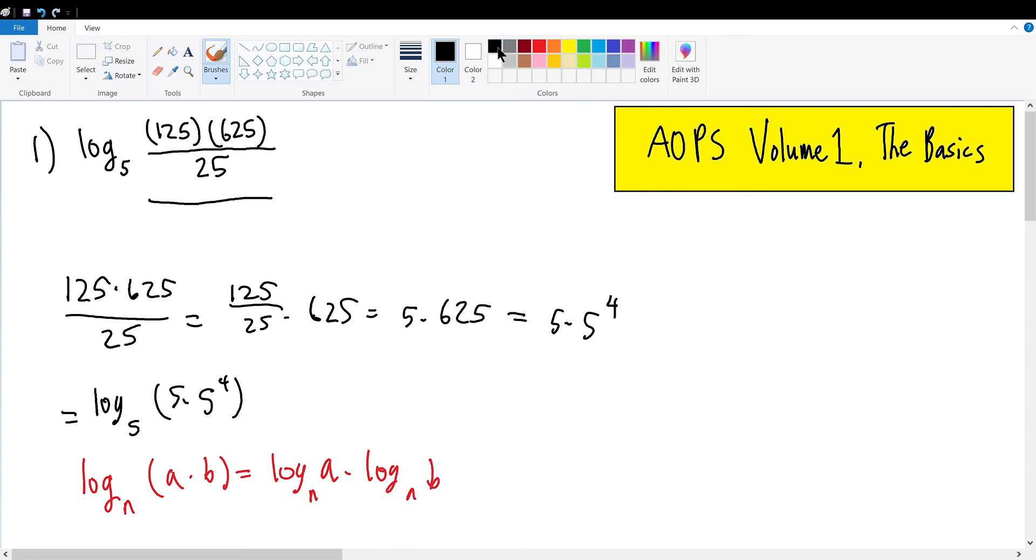Therefore, we can rewrite log base 5 of 5 times 5 to the 4th power as log base 5 of 5 plus log base 5 of 5 to the 4th power, which equals 1 plus 4, which equals 5, making this logarithmic equation equal to 5.